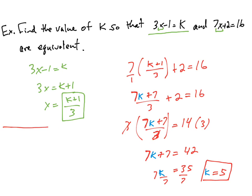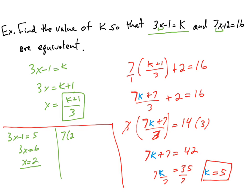Let's verify these are equivalent. In the first equation, substitute k equals 5: 3x minus 1 equals 5 gives 3x equals 6, so x equals 2. Checking x equals 2 in the second equation: 7 times 2 plus 2 equals 14 plus 2 equals 16. Yes, 16 equals 16, so the value of k equals 5 makes these two equations equivalent.